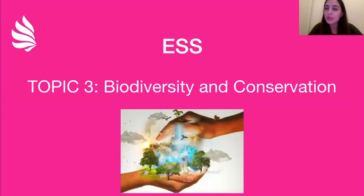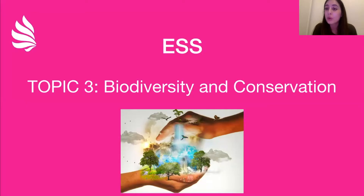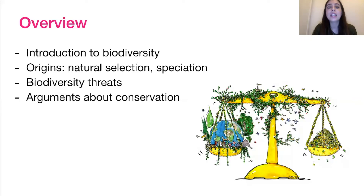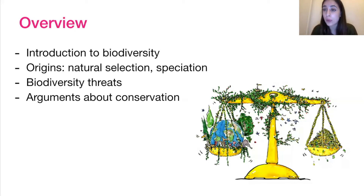Hello again. We're now on the third episode of the series where we're going to be looking at biodiversity and conservation. Now that we've gotten a general idea of what a system is and specifically what an ecosystem is, we're going to look at an important feature of ecosystems: biodiversity. We'll then look at the origins of biodiversity — evolution, natural selection, and speciation — why it's under threat, and conservation efforts, tying in with environmental value systems from topic one.